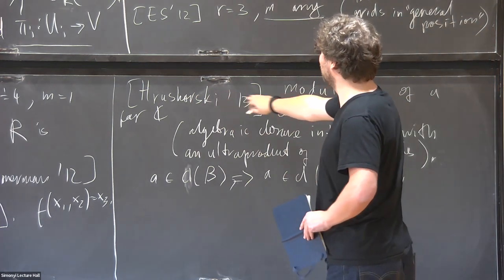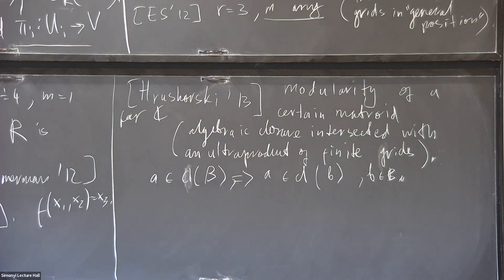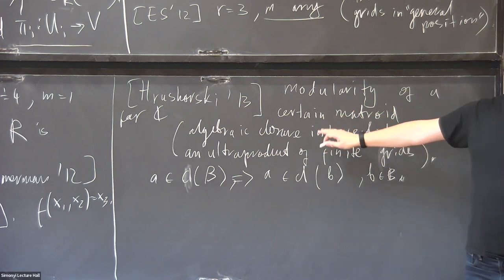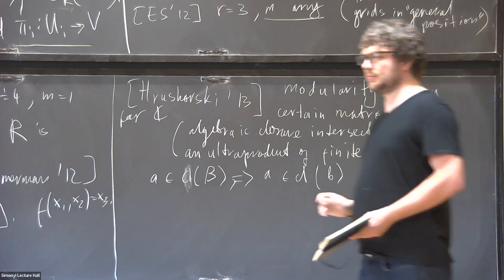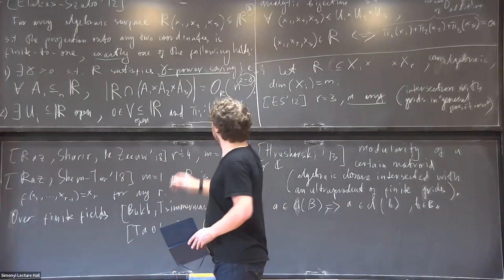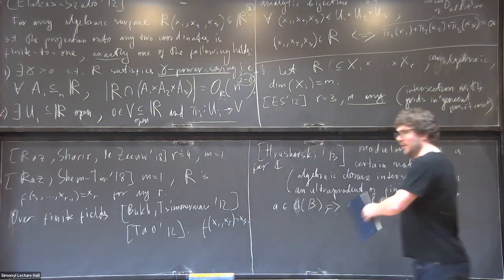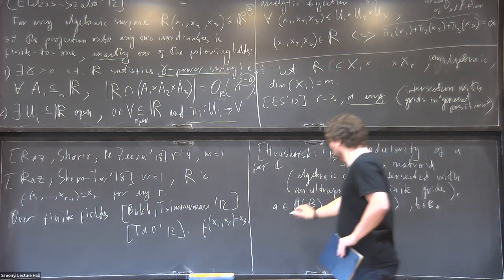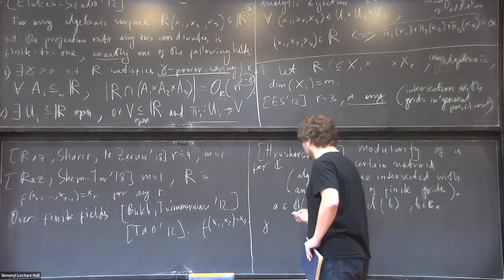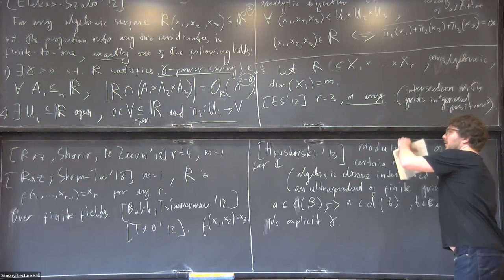Modularity in a matroid: in the lattice of closed sets, if a point is in the closure of some set B, then it already has to belong to the closure of a single point in B. This corresponds to modularity of the lattice of closed sets. Once you get this, you can use projectivization results to coordinate this — basically you find something like a projective geometry and from it you can recognize the group. But you get no explicit bound on gamma.